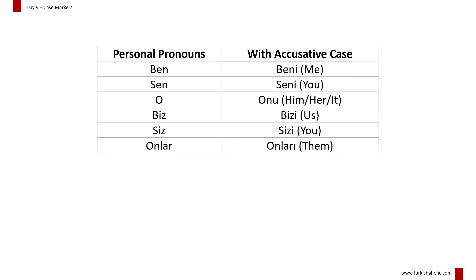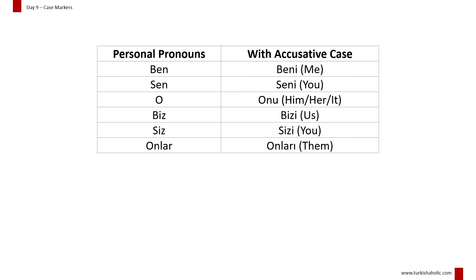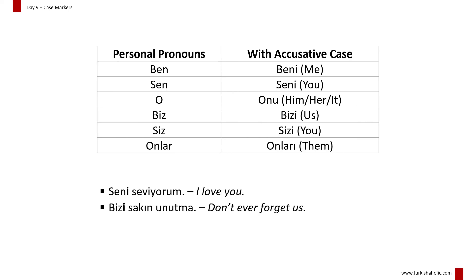Personal pronouns can also be followed by the accusative case: Ben → beni, sen → seni, o → onu, biz → bizi, siz → sizi, onlar → onları. Seni seviyorum. Bizi sakın unutma.